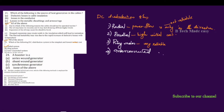So for DC distribution systems, the simplest and lowest initial cost system is the radial system.